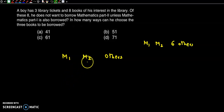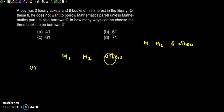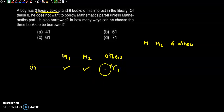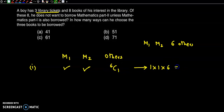Case 1: He borrows Maths Part 1 and Maths Part 2. That uses 2 tickets, so he selects 1 more from the 6 others. That gives 1 × 1 × 6C1 = 6 ways.